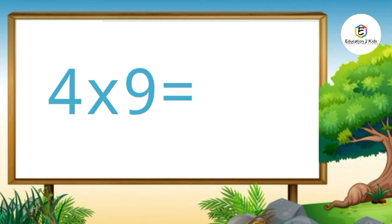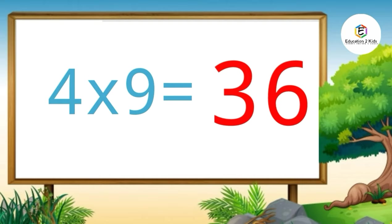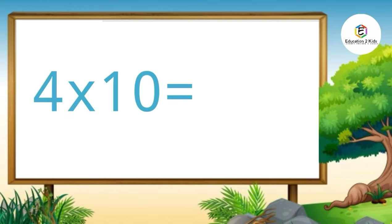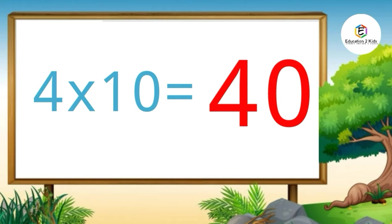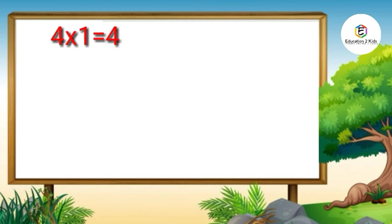Four nines are thirty-six. Four tens are forty. Four ones are four.